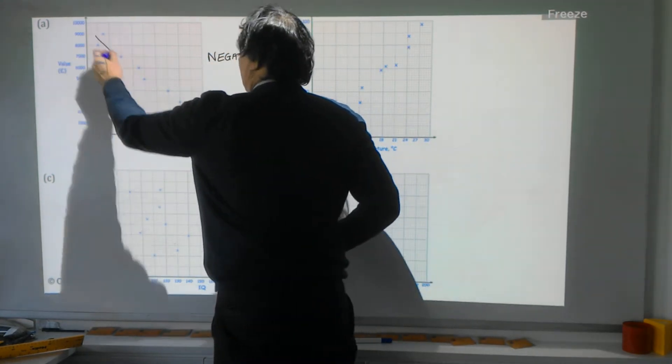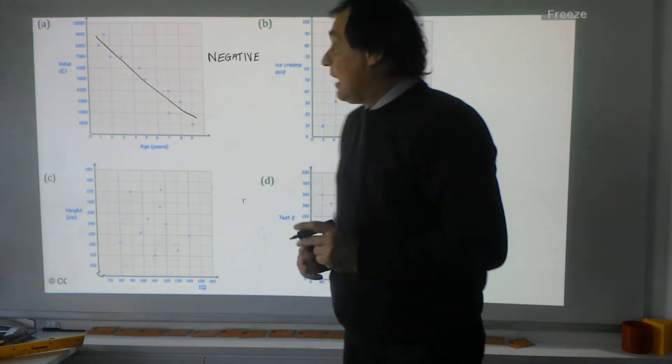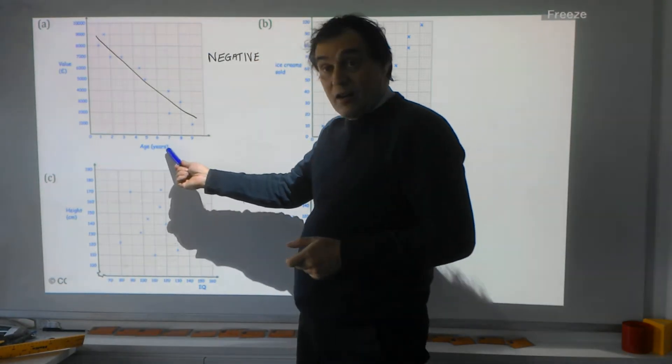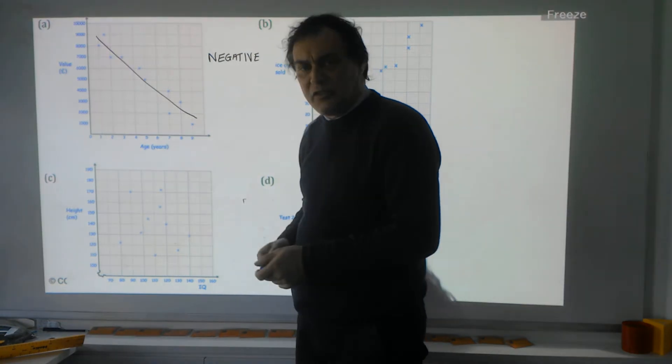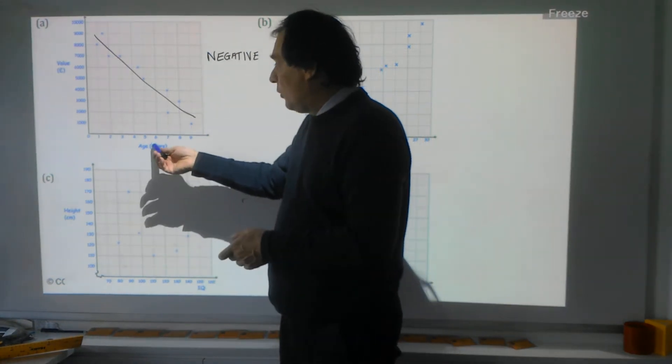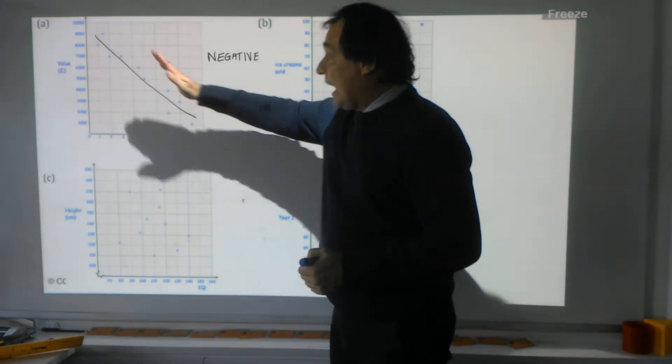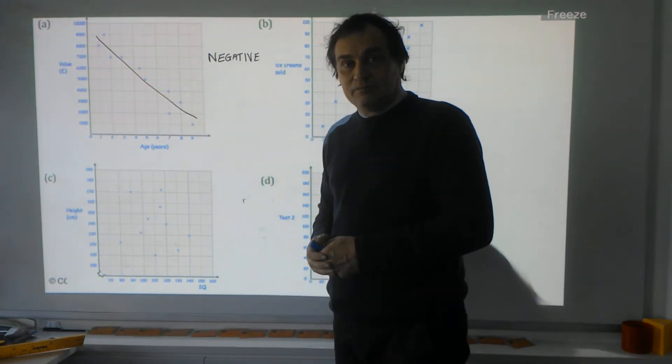Correlation. We can see it's going roughly in a line downwards. What that means is the older the car gets, the less value it has. So you'd be able to sell it for less. Where we've got this downward trend, that's what we call negative correlation.